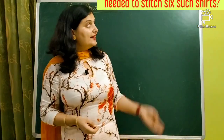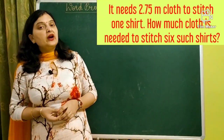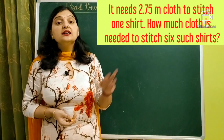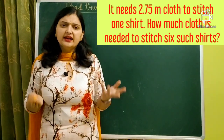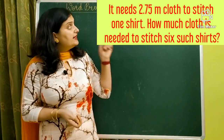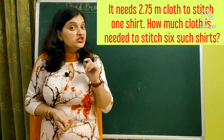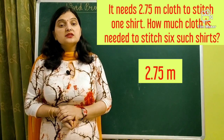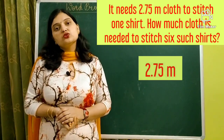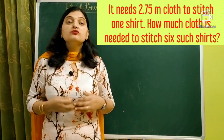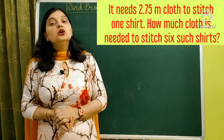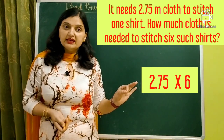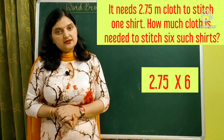Our next question: it needs 2.75 meters of cloth to stitch one shirt. How much cloth is needed to stitch six such shirts? The length of cloth needed for one shirt is 2.75 meters. You have to find the cloth needed for six shirts. For six shirts you need more cloth, so we multiply 2.75 by 6. After multiplying, we put the decimal in the correct place to get our answer.